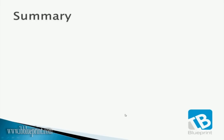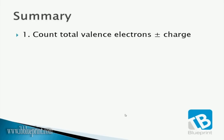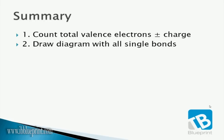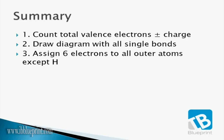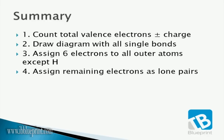In summary: Step 1, count total valence electrons plus or minus the charge. Step 2, draw the diagram with all single bonds. Step 3, assign six electrons to all outer atoms except hydrogen. Step 4, assign remaining electrons as lone pairs. And finally, minimize the formal charge without violating any of the rules mentioned. Thank you for listening to this tutorial by IB Blueprint. We hope this has been helpful to your IB studies.